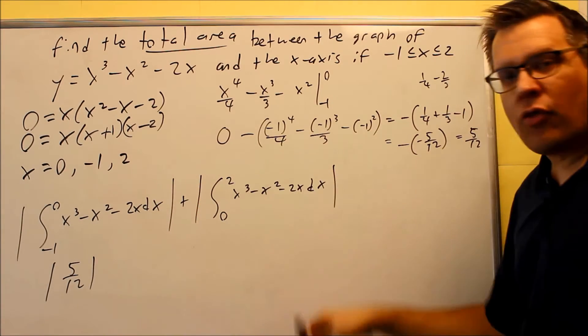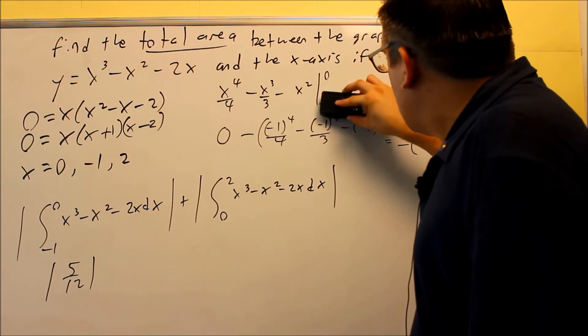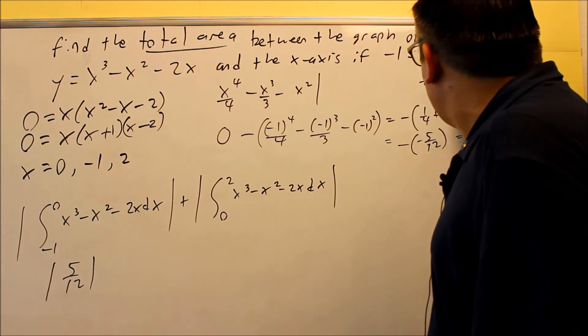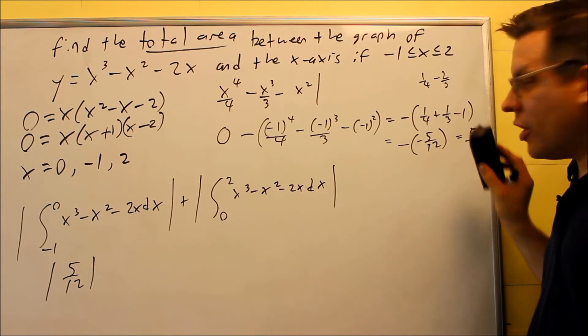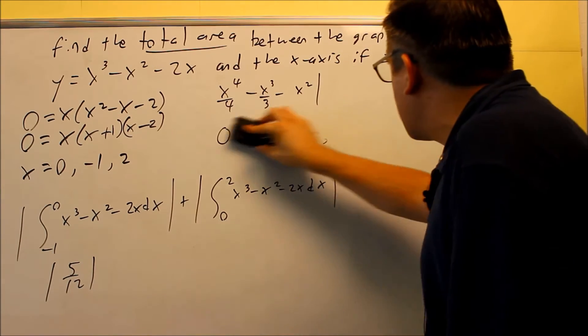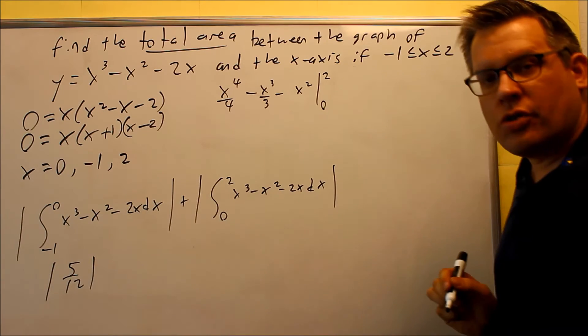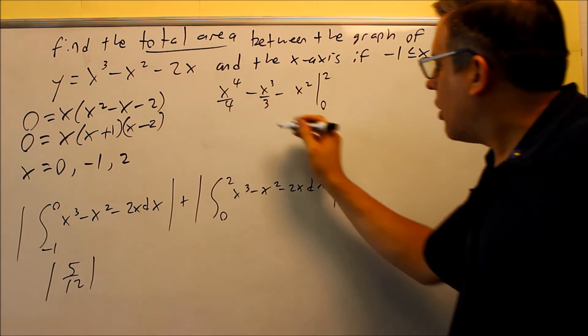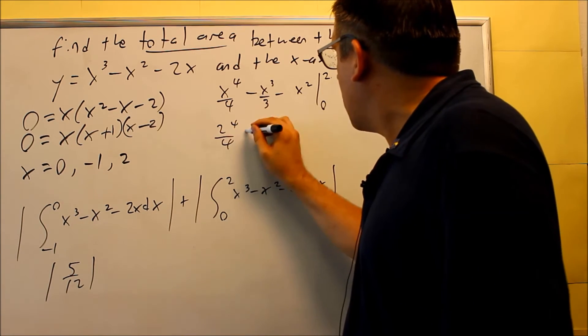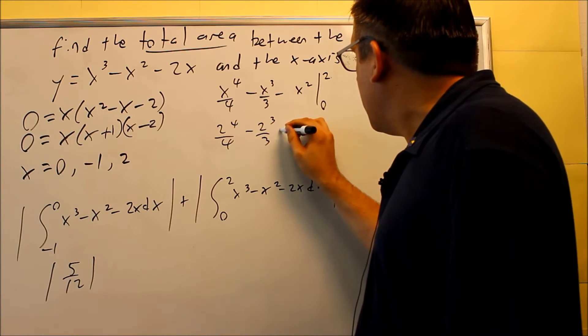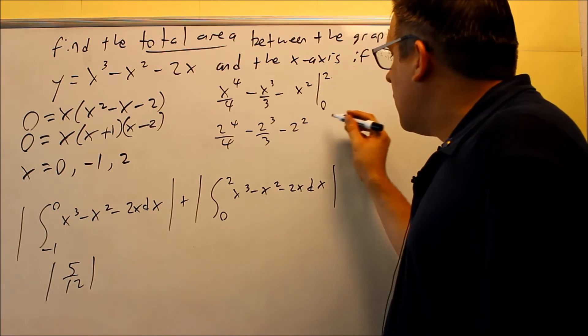Now we have to do the whole thing for the second one. So I have my same antiderivative, and I'm going to erase this, and now we'll do zero to two. Let's put two into all those. Two to the fourth over four, two cubed over three minus two squared. And then minus,